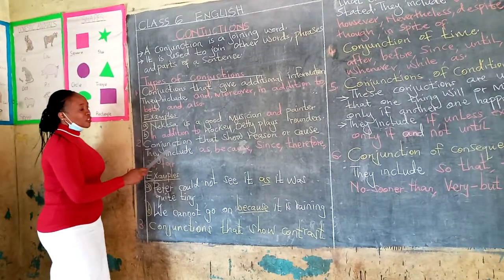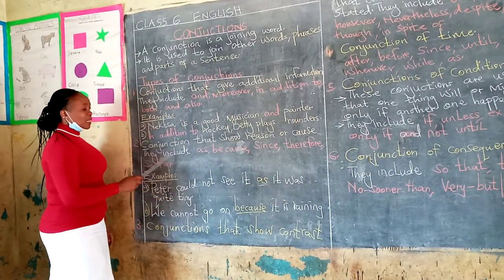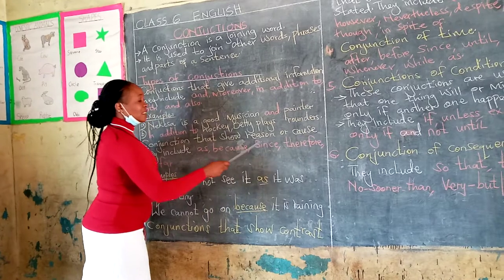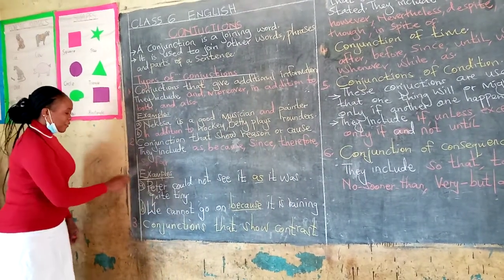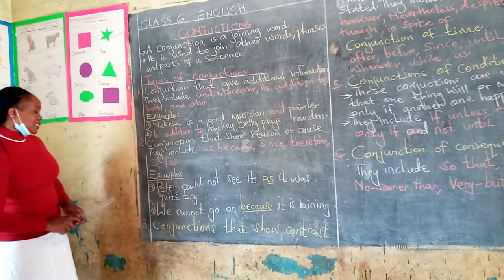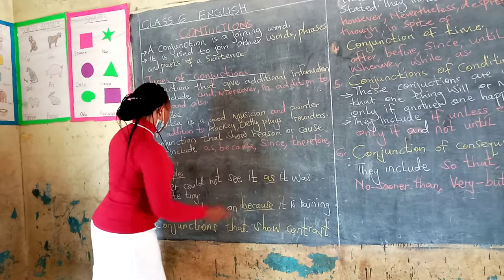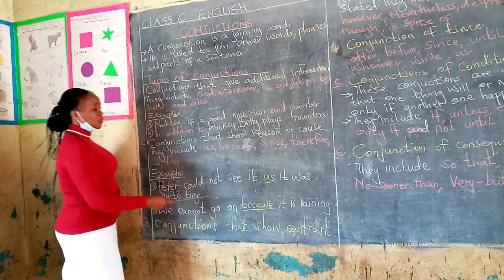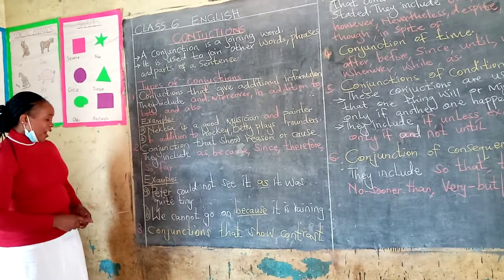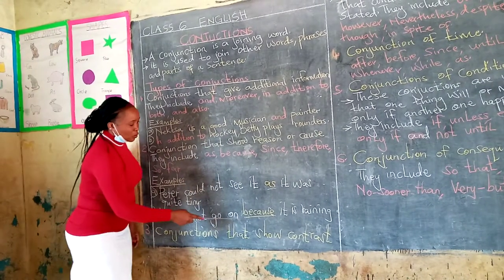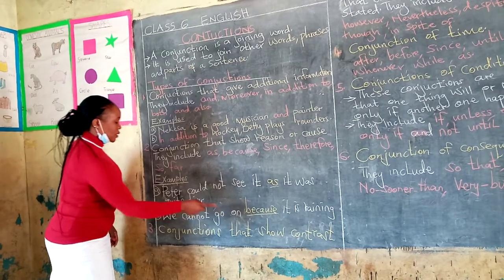Let's see type number two: conjunctions that show reason or cause. These ones include: as, because, since, therefore, so, and for. Let's see examples in sentences. Peter could not see it as it was quite tiny — so the conjunction there is 'as'. We cannot go on because it is raining — we have the word 'because' as a conjunction in our sentence.